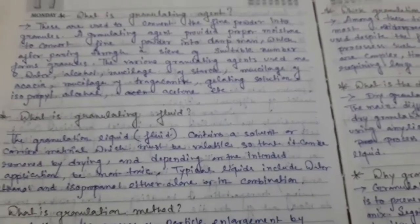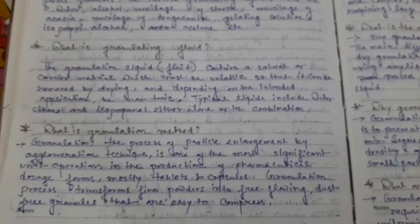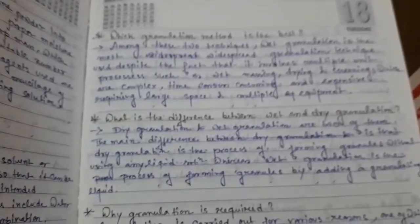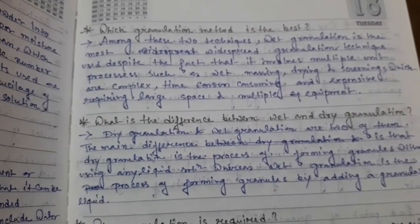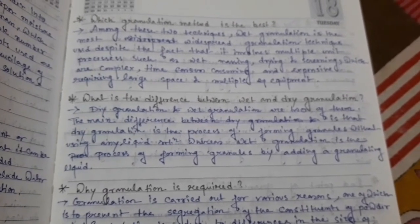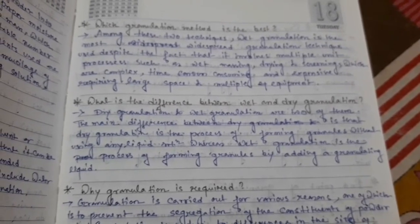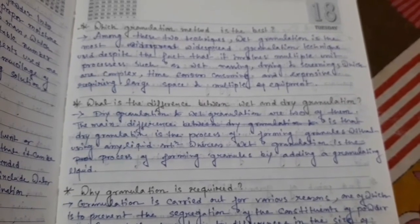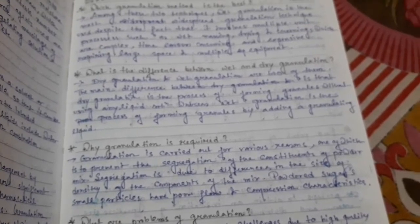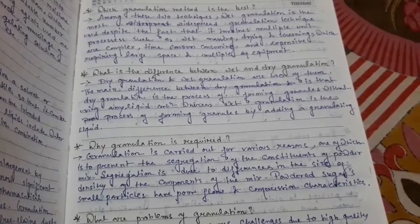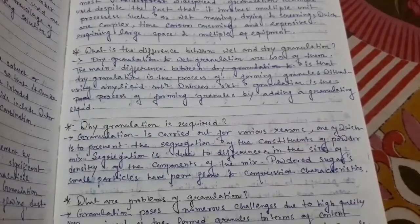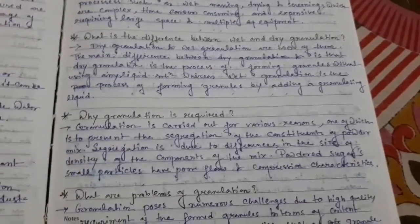What is granulation? What is the granulation method? Which granulation method is the best? Among wet granulation and dry granulation methods — what is the difference between wet and dry granulation? The main difference is that dry granulation is the process of forming granules without using any liquid solution, whereas wet granulation is the process of forming granules by adding a granulating liquid. Why is granulation required? Granulation is carried out to prevent segregation of constituents of powder mix. Segregation is due to differences in size and density of components. Small particles have poor flow and compression characteristics.